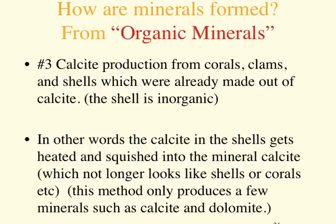The third way is what's called organic minerals. Organic minerals are a little bit more rare, but basically calcite is produced as a byproduct by corals, clams, and things with shells — they make CaCO3. That calcite forms because it was made by an organic thing; it's no longer living, but the shell was made by the living thing.